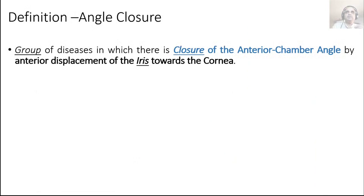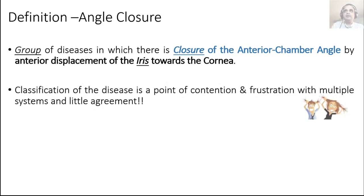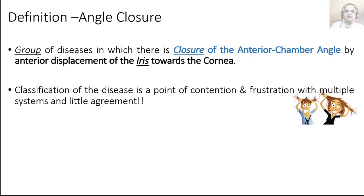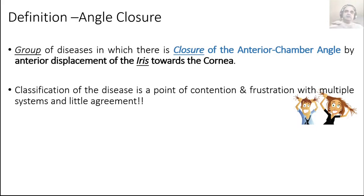Angle closure is a group of diseases characterized by closure of the anterior chamber angle by anterior displacement of the iris towards the cornea. The biggest problem is that there are so many classification systems with such contention that they tend to conflict with one another, and some are made by specific institutions just to make management easier for them.